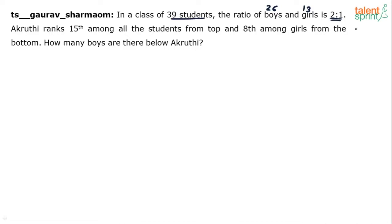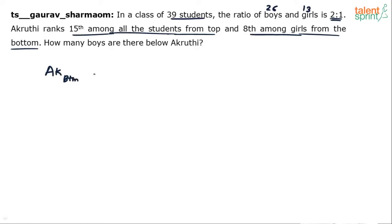Akruti ranks 15th among all students from the top, and 8th among girls from the bottom. How many boys are there below Akruti? First, find Akruti's rank from the bottom: total students minus rank from top plus 1, which is 39 minus 15 plus 1, giving 25. So Akruti is 25th from the bottom.